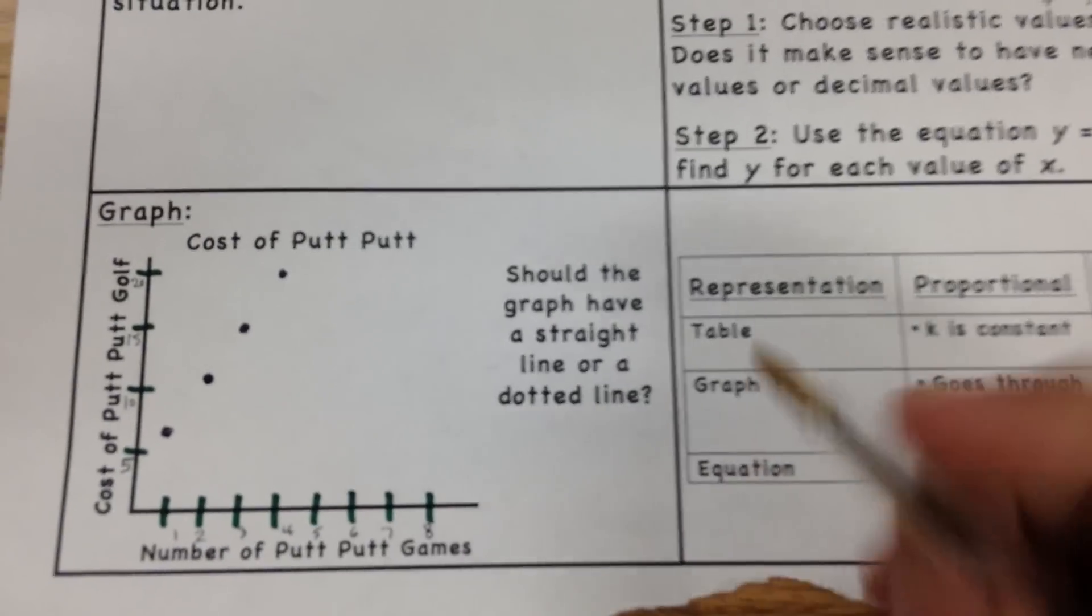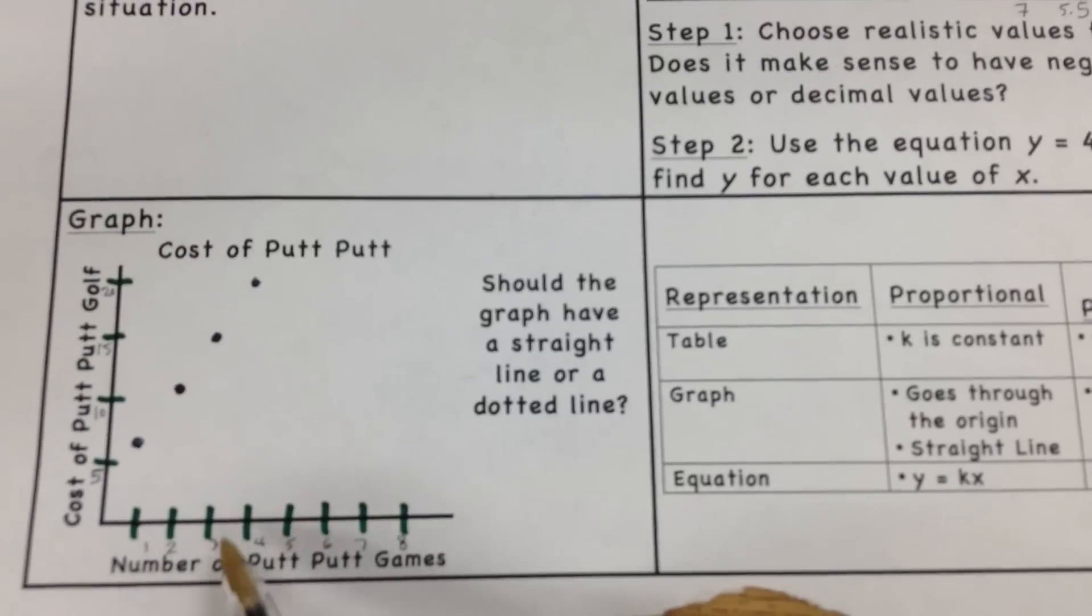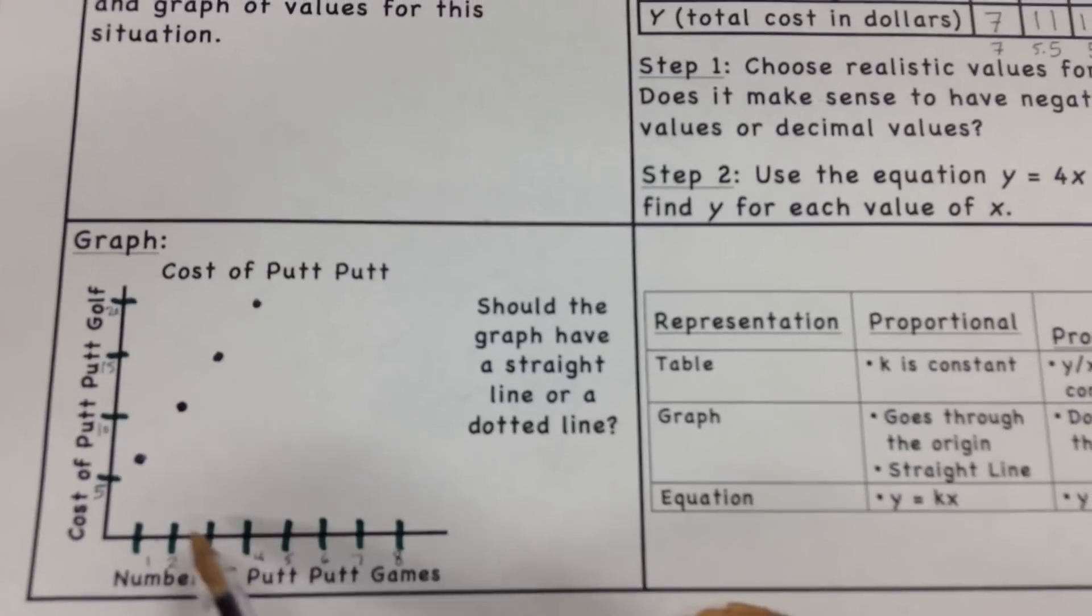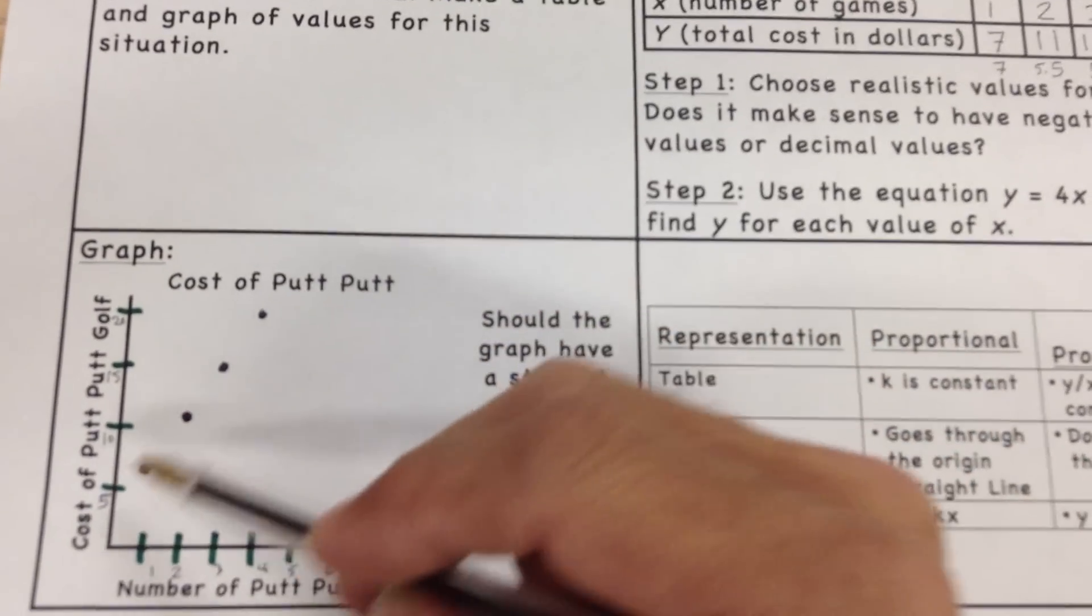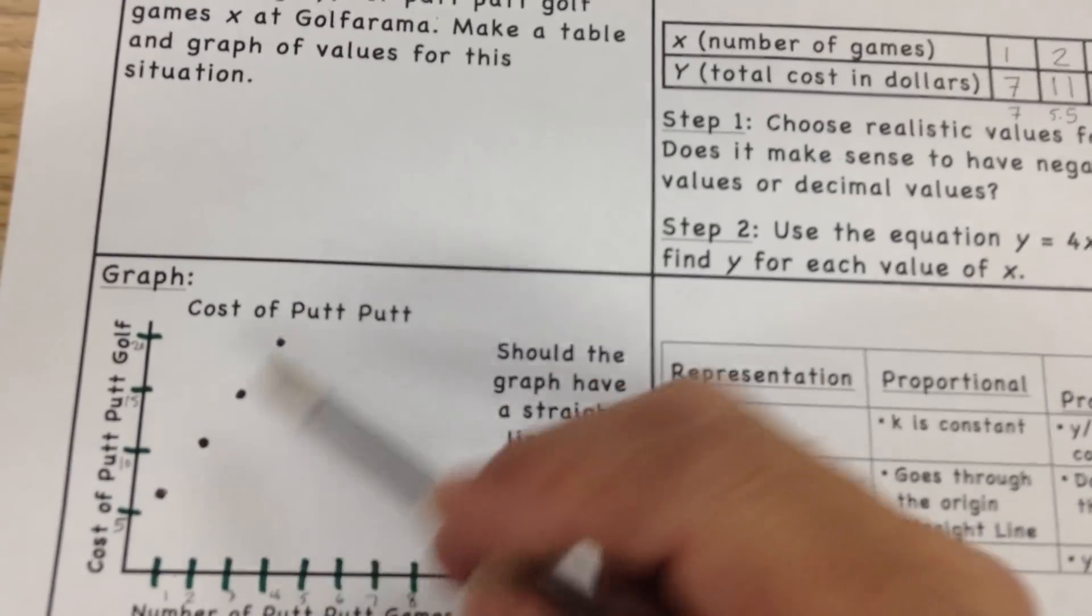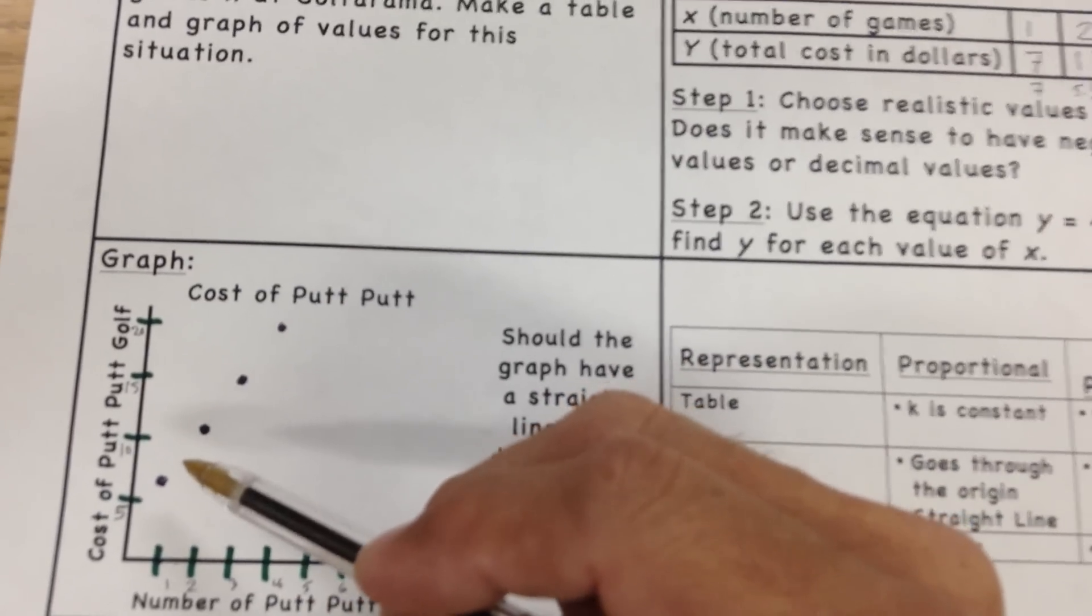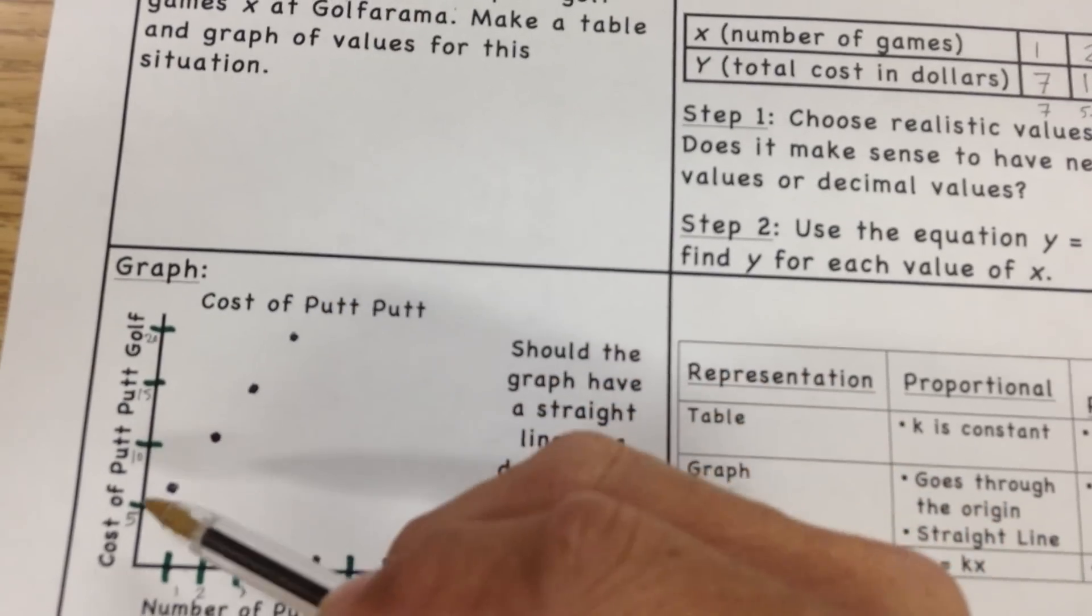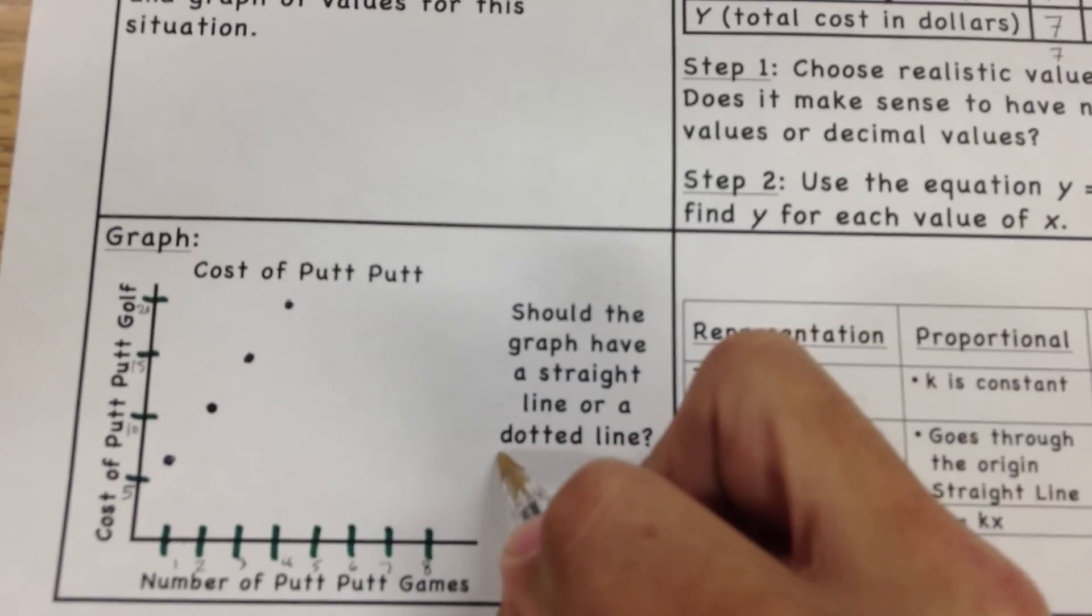However, in this situation, we have this question: should the graph have a straight line or a dotted line? Well, let's think about this. This is number of games. One game is this much. Two games is this much. We wouldn't try to figure out how much a game and a half was. You can't pay for one and a half games or two and a half games or anything like that. So there aren't going to be any points in between. We can see that it is non-proportional because it doesn't go through zero-zero, but it's a straight line. There's a constant involved that's four because that's what we're multiplying times x every time. But we're not going to put these points in here because you're not going to pay for half a game or a third of a game or any fraction of a game. So we're not going to actually darken in this line.